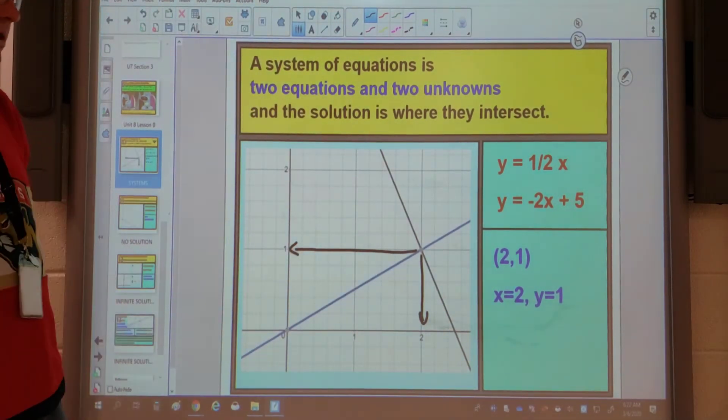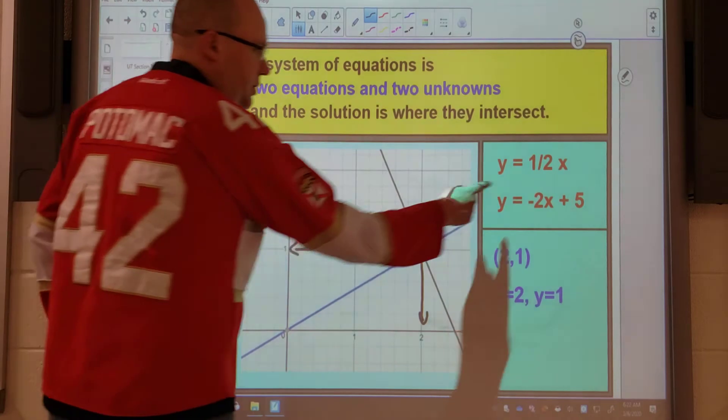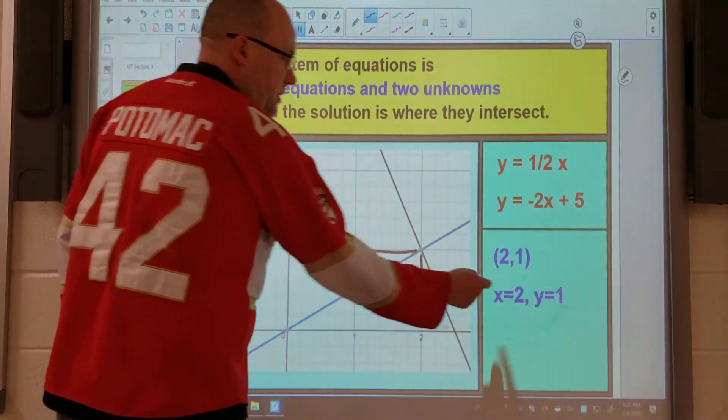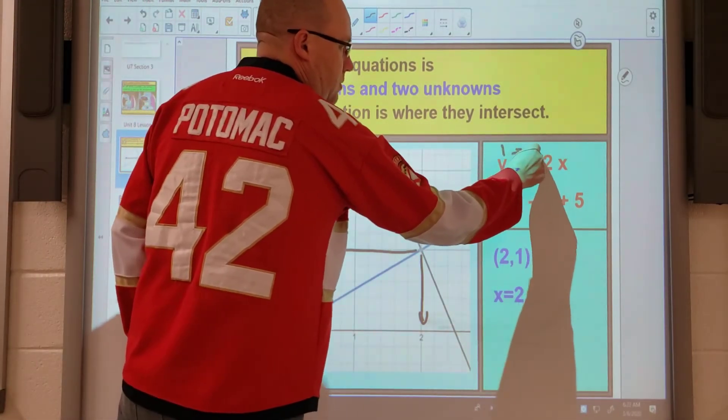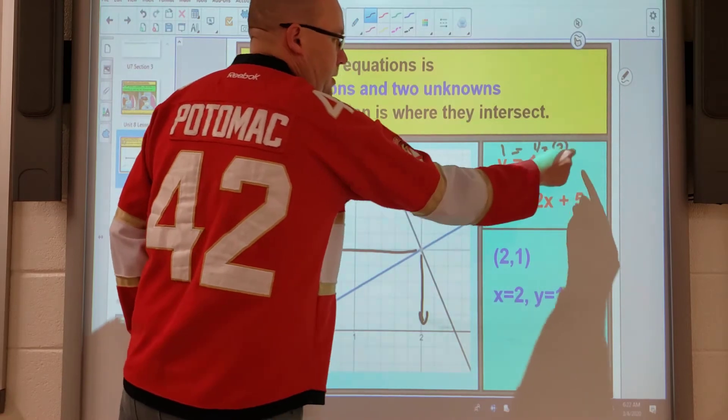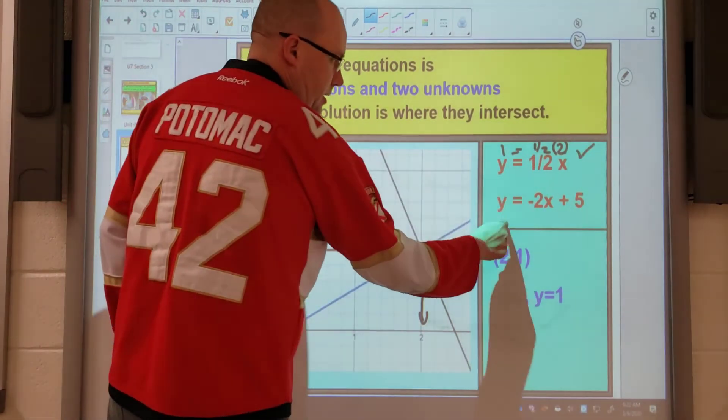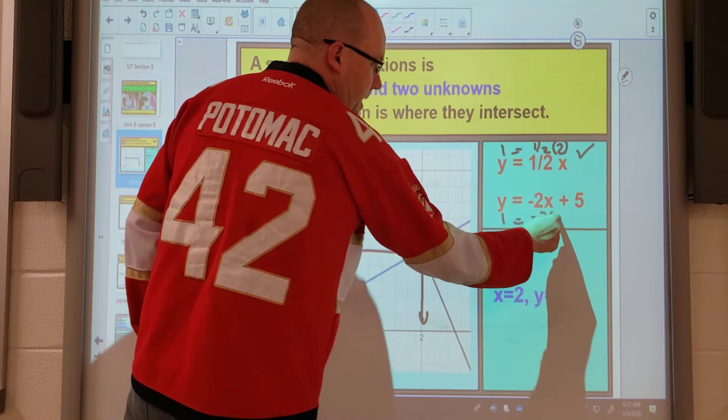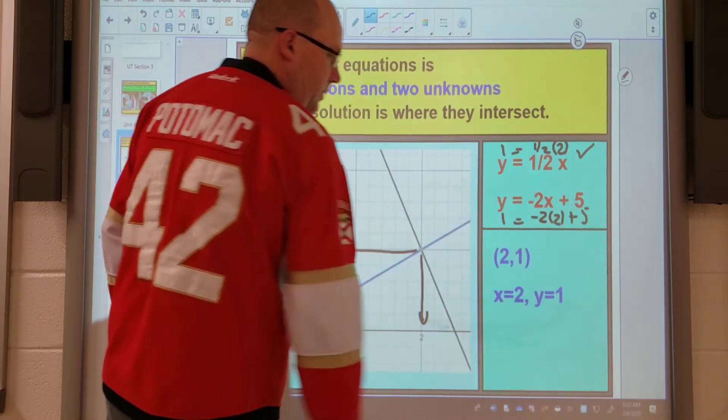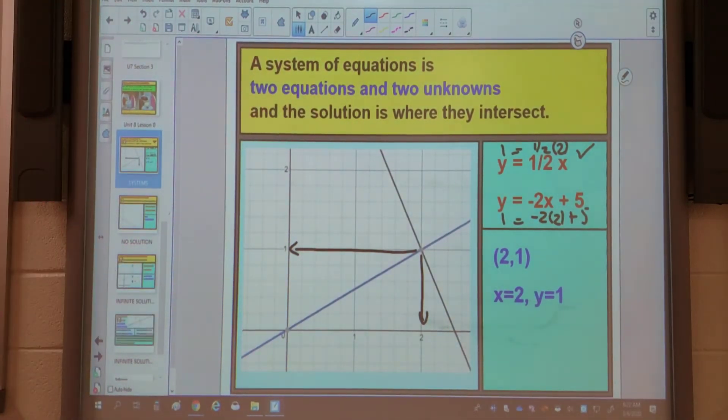Now if you want to check your answer to see if that's true then just substitute in and it must work for both equations. So does 1 equal 1 half of 2? And the answer is yes. And on this equation here does 1 equal negative 2 times 2 plus 5? Once again the answer is yes which is why that's the answer to that system.